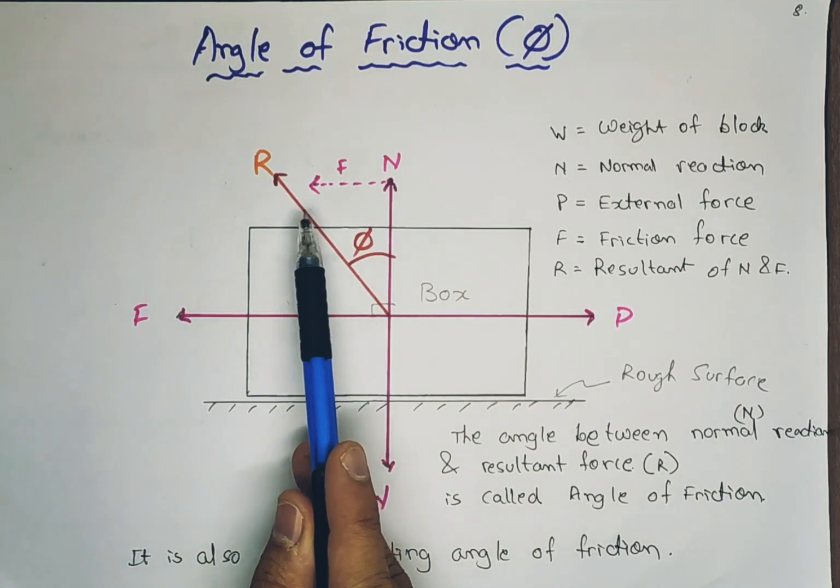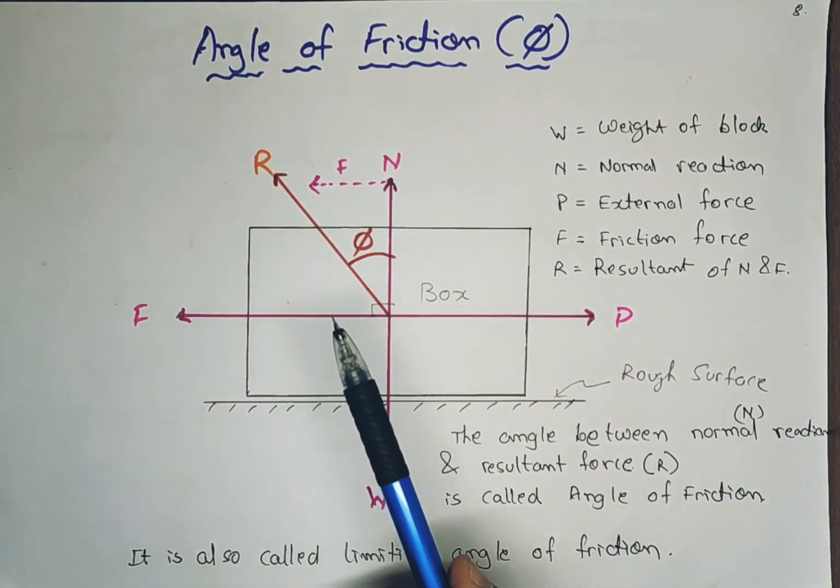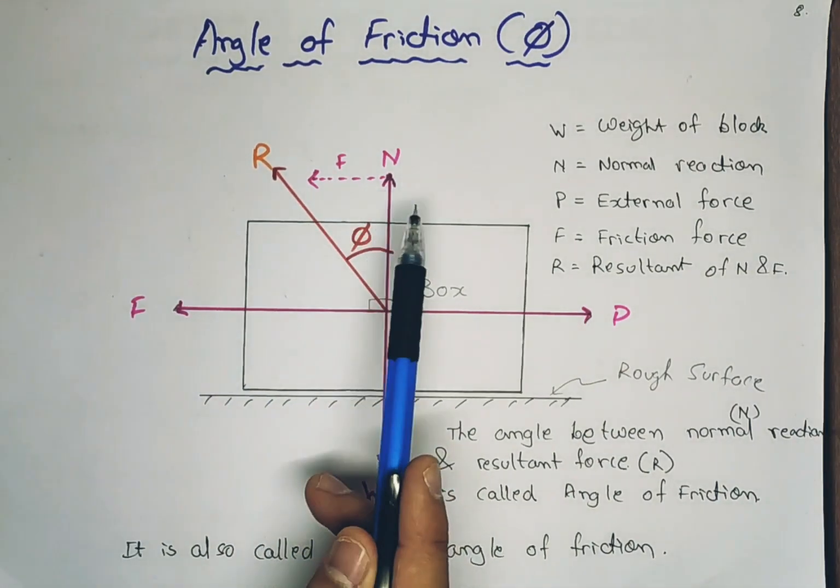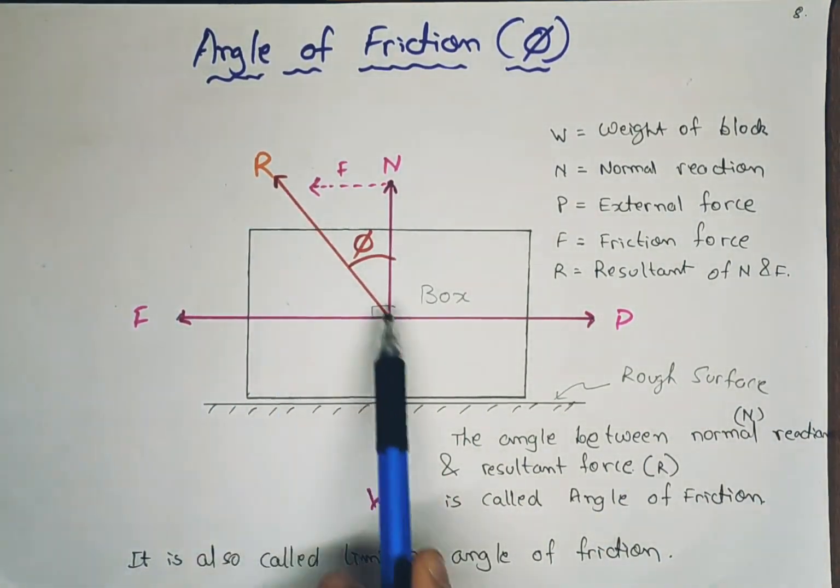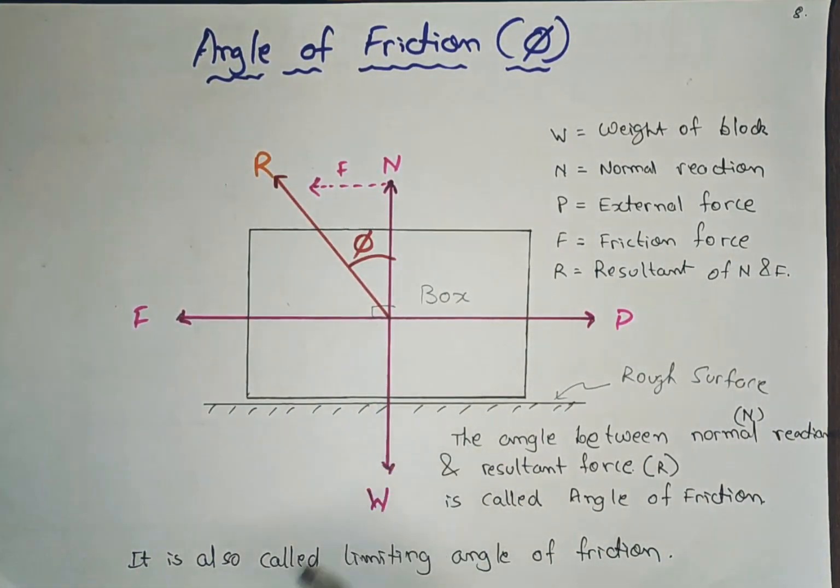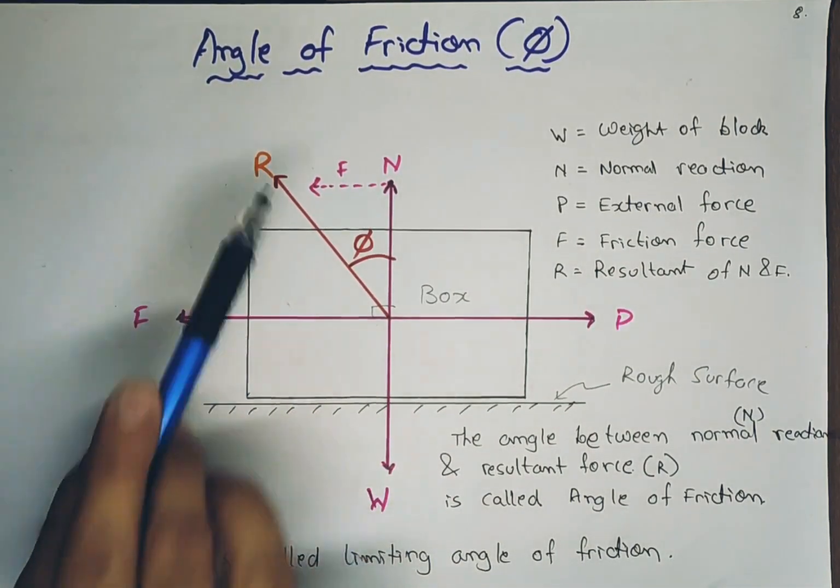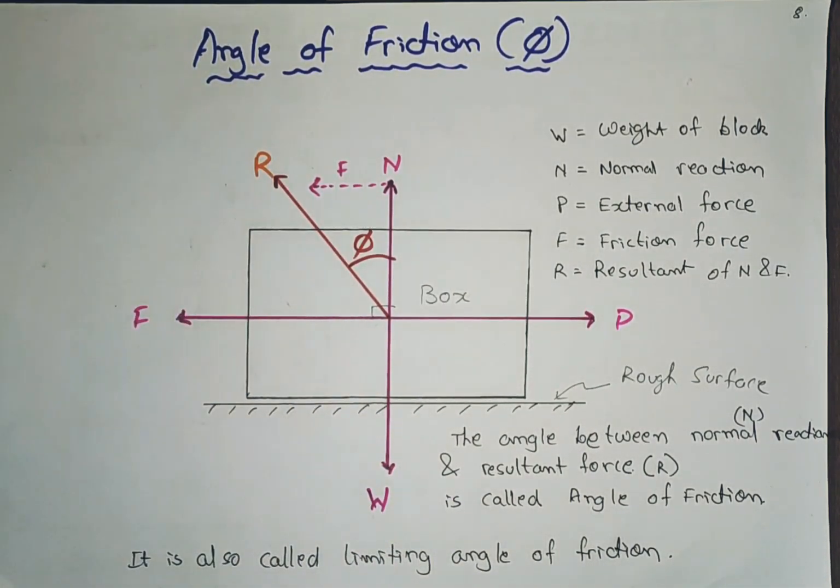And as it is the resultant of normal and frictional force, it is shown between both of these and it is abbreviated by R. So basically, what is angle of friction?